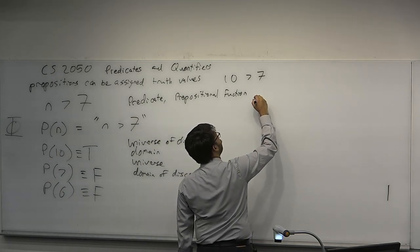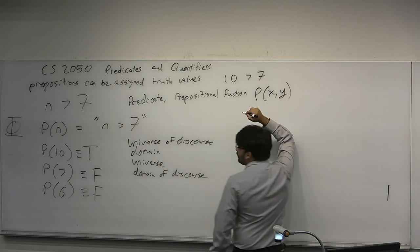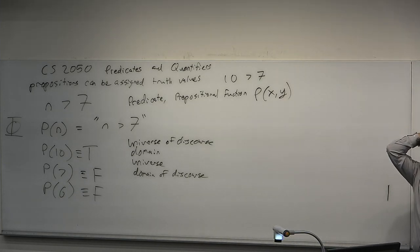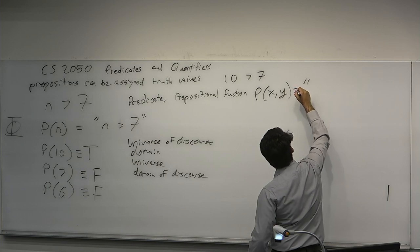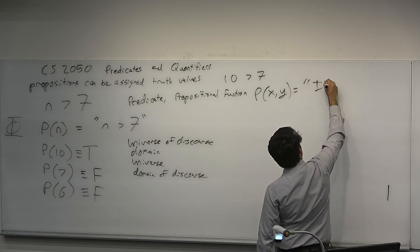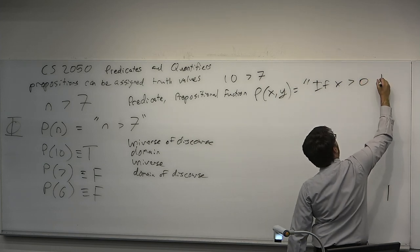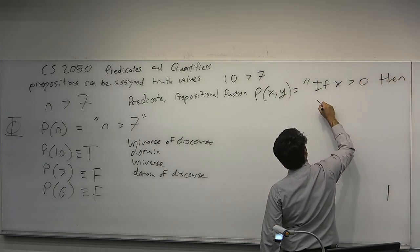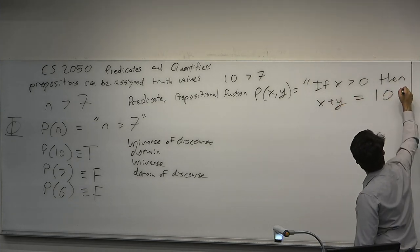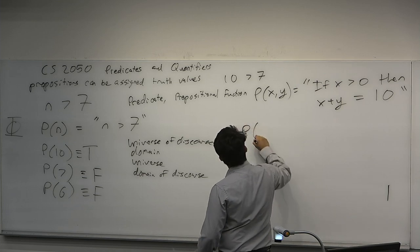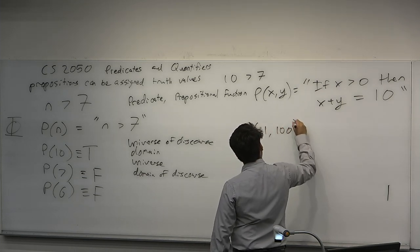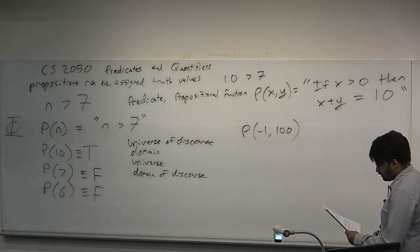Consider the following predicate: P(x, y). Functions may take on multiple arguments, so we may have several predicates. Let P(x, y) be: if x is greater than 0, then x plus y is equal to 10. This is a valid predicate. Can it be assigned a truth value? No, not until you evaluate all its arguments. What is P(-1, 100)? It is true. Why? Because -1 bigger than 0 is false, and recall P implies Q — if P is false, then P implies Q is true.